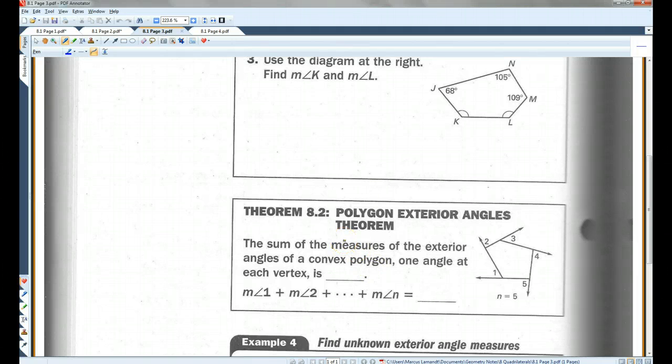Theorem 8.2, polygon exterior angles theorem. The sum of the measures of the exterior angles of a convex, convex, note that it doesn't work for concave polygons. Convex polygon, one angle at each vertex is 360 degrees. This is actually, I think, a much easier theorem to use than the other one because no matter how many sides a polygon has, all the exterior angles are going to add up to 360 degrees. With the interior angles, you're going to get a different sum depending on how many sides the polygon has. But the exterior angles, always 360.